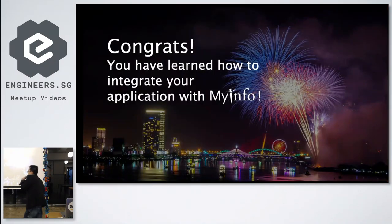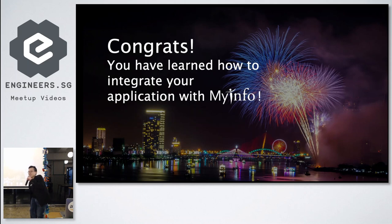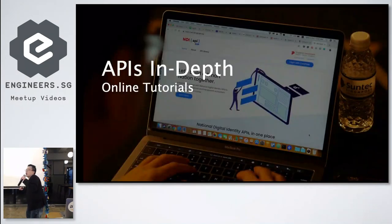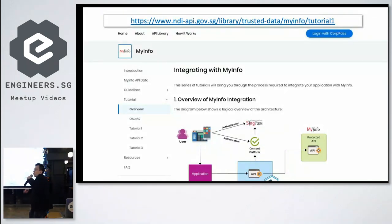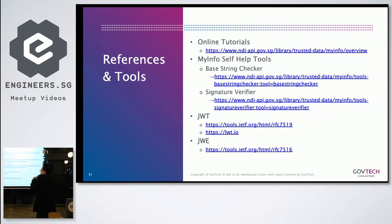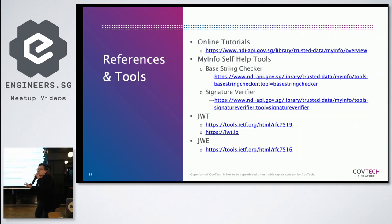Congratulations — you've now learned how to integrate your application with MyInfo! Hopefully we'll see 20 new applications tomorrow. If you want to try it out, we have tutorials online — no login or registration required, just go and have a look. We use JWE and have some tools to help you check your base string and verify your signature, which in our experience is where most developers run into issues. Those tools are available on the portal.